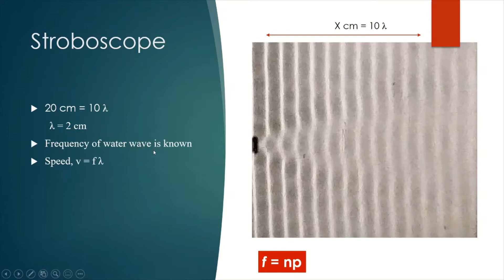Frequency of the water wave, as we mentioned, we can determine it through the frequency of the stroboscope. Therefore, the speed of water wave can be determined using the formula v equals f lambda.